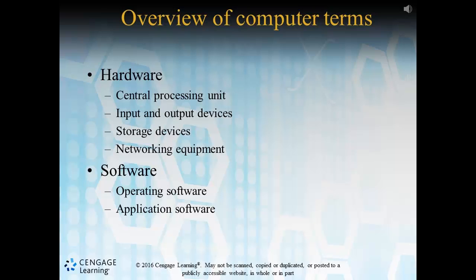Let's start with a remedial overview of what makes up a computer in terms of hardware. A central processing unit or CPU can be thought of as the brain of a computer — it literally controls all processing functions of information passing to and from the device. Input devices allow users to enter information into the system. Think about your broad experiences with a computer: a mouse, keyboard, camera, or any other equipment used to place information into a computer system.